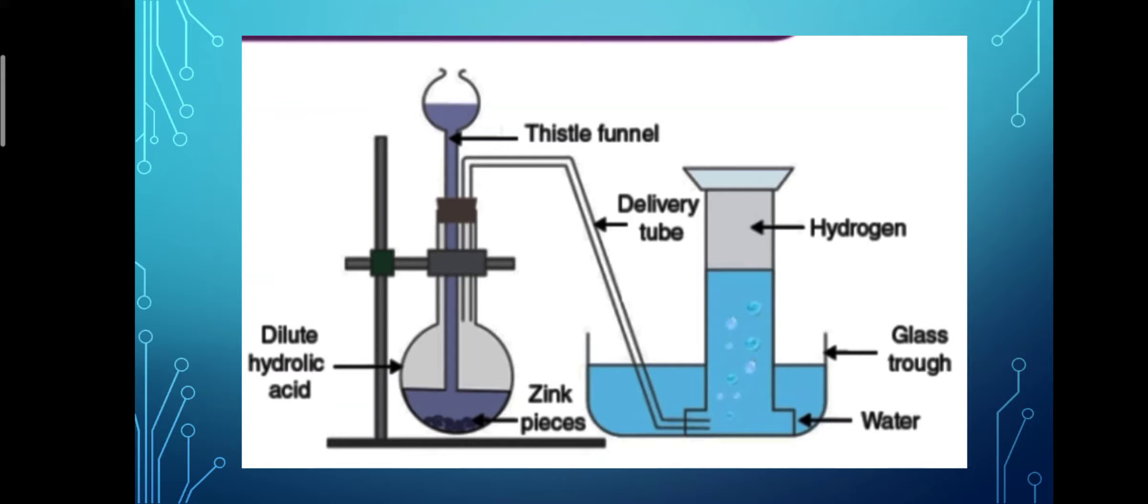Apparatus used for producing hydrogen gas. Granulated zinc or zinc pieces is taken in round bottom flask, which is covered with cork.